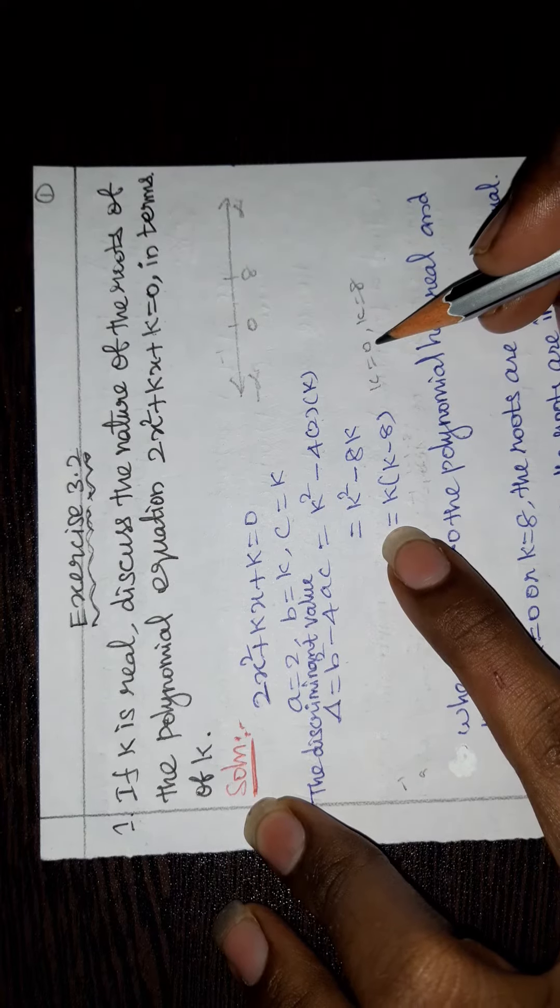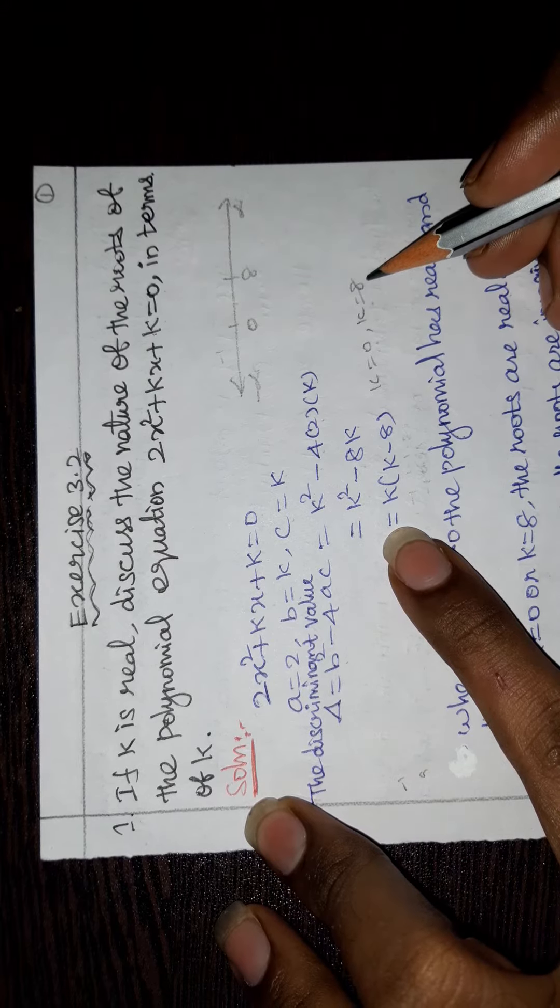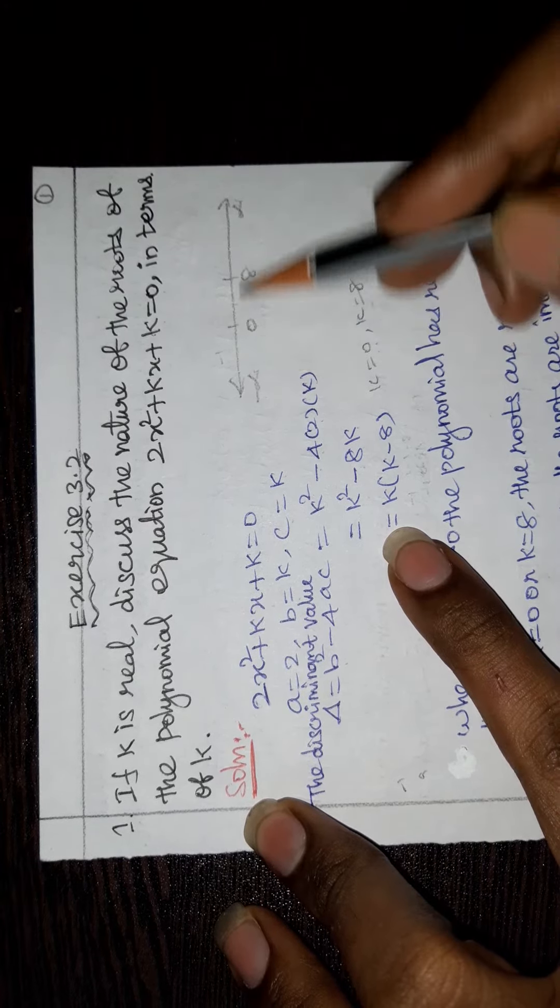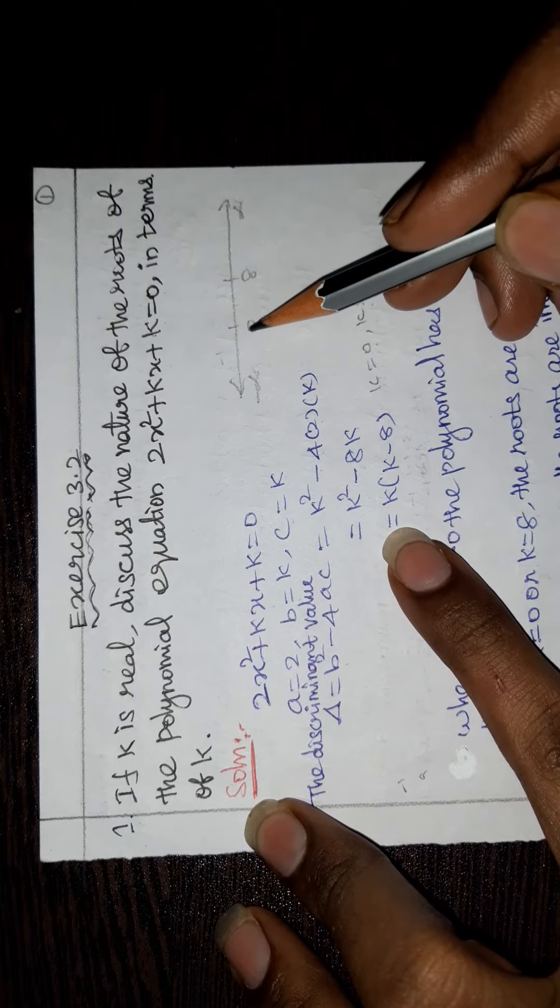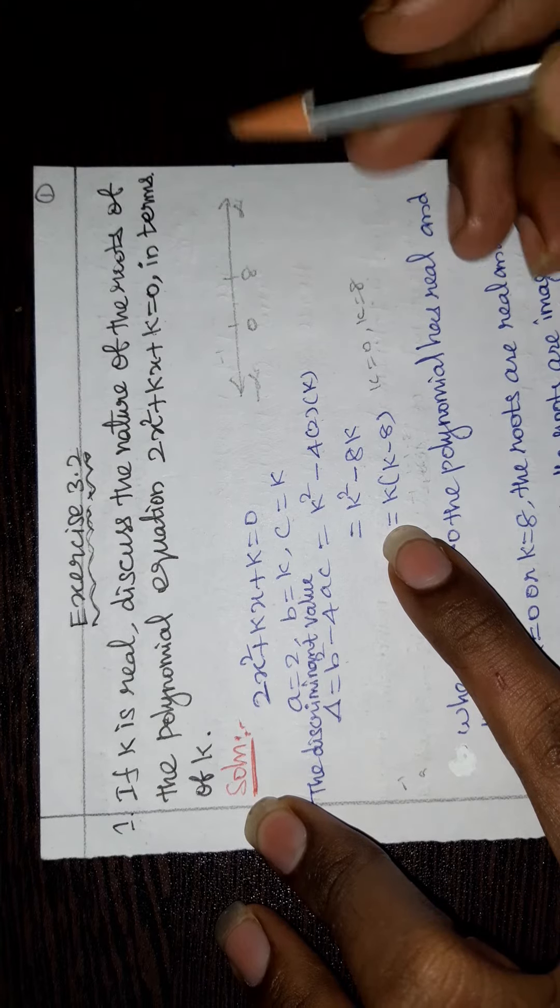So the value is k = 0 and k = 8. Taking number line minus infinity to plus infinity, mark 0 and 8.